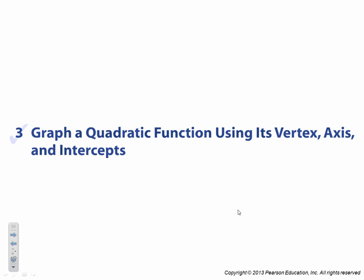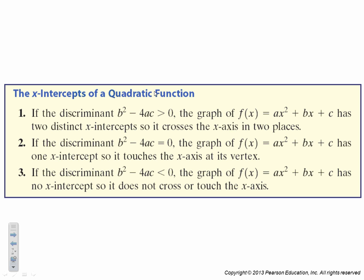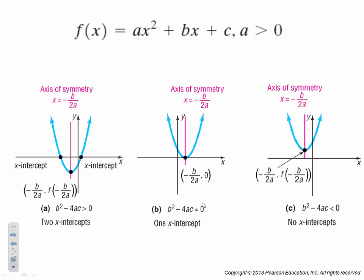Graph a quadratic function using its vertex, axis, and intercepts. Okay, so we're going to use the discriminant, which is the part underneath the square root in our quadratic equation to determine whether we have one x-intercept, two x-intercepts, or no x-intercepts. So think about it like this. If my discriminant, b squared minus 4ac is greater than zero, I have two solutions. If it's equal to zero, I have one solution. And if it's less than zero, so if it's a negative, I have no solutions.